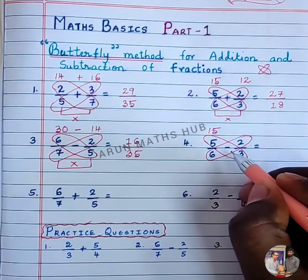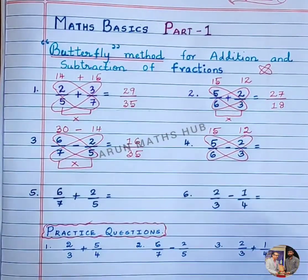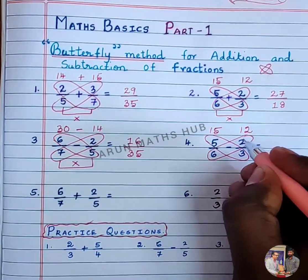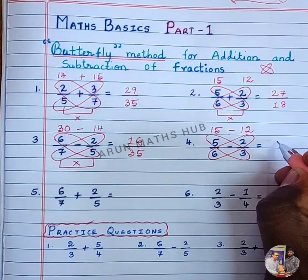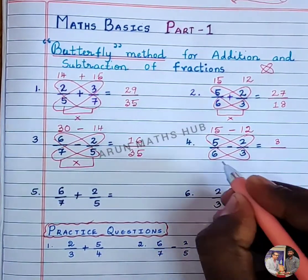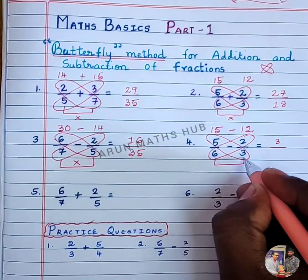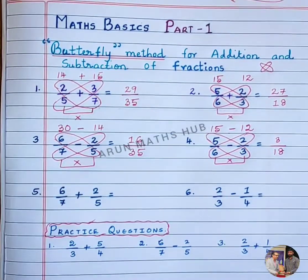The same way, 6 into 2 is 12. We need to use subtraction now. 15 minus 12 is 3. Now for the denominator, you should multiply the denominators of both fractions. That is 6 times 3, which is 18. This method